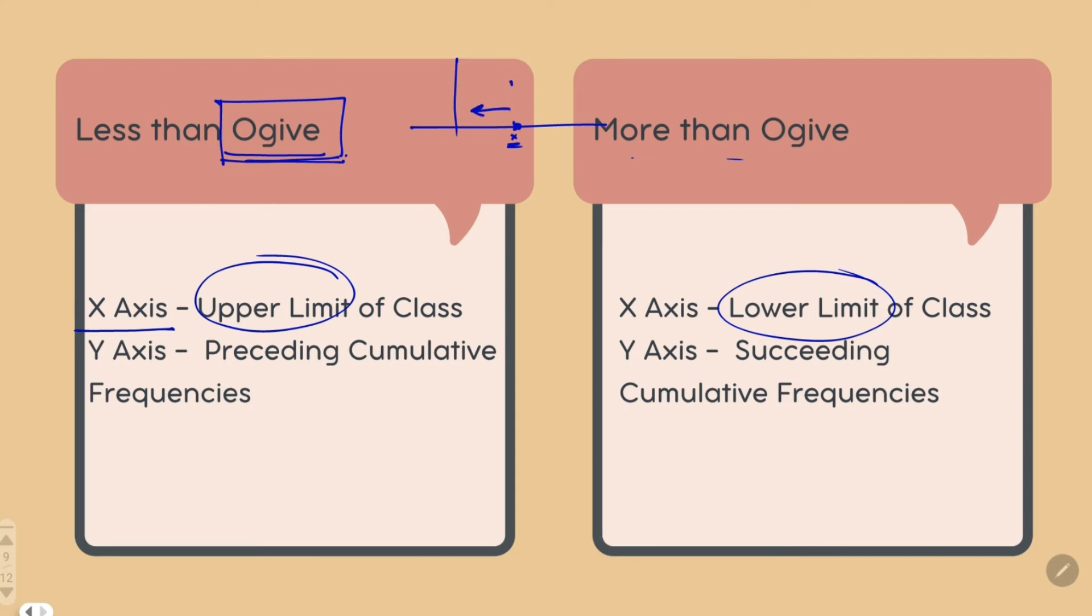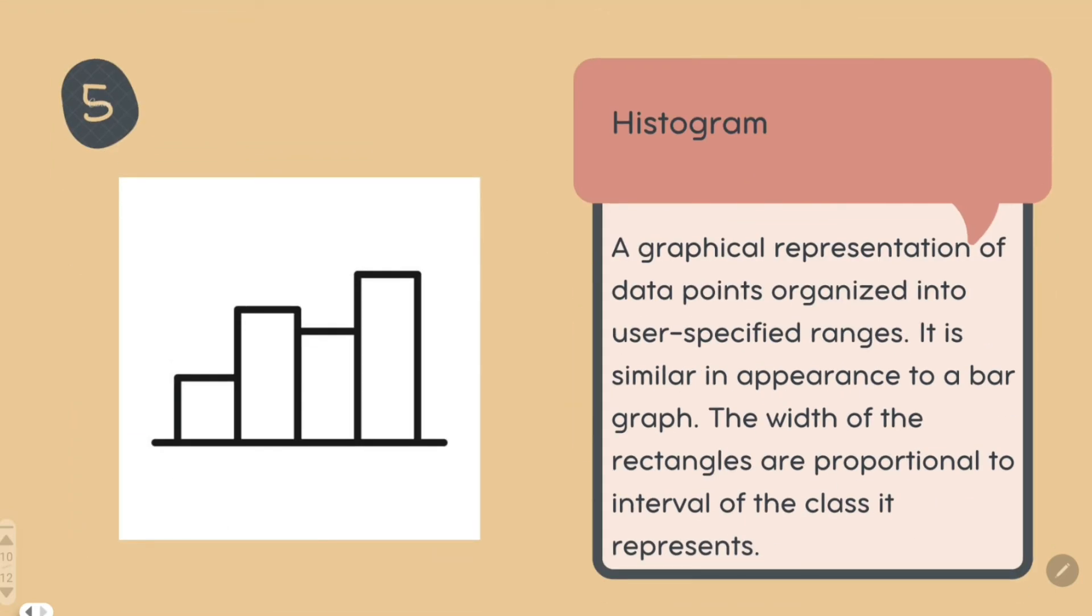This is a histogram, which is almost similar to a bar graph. But in a histogram, the width of your rectangle represents your class interval, whereas in a bar graph the width doesn't represent anything—it's just the height that matters. In a histogram, the width corresponds to a class interval and the height is your frequency.